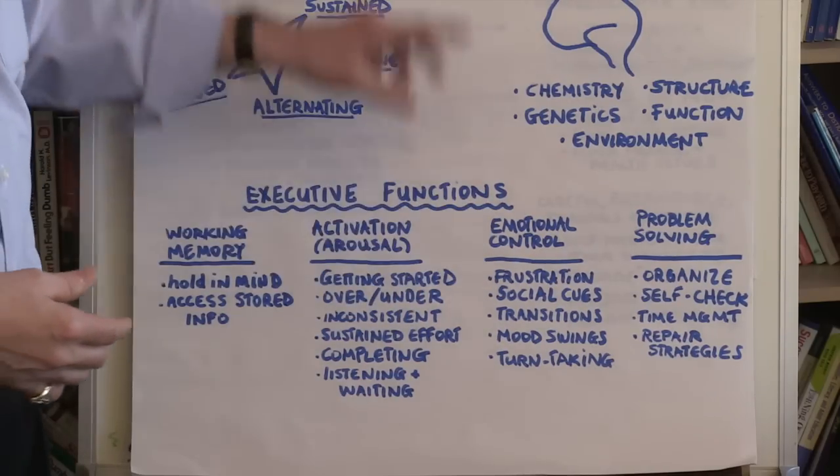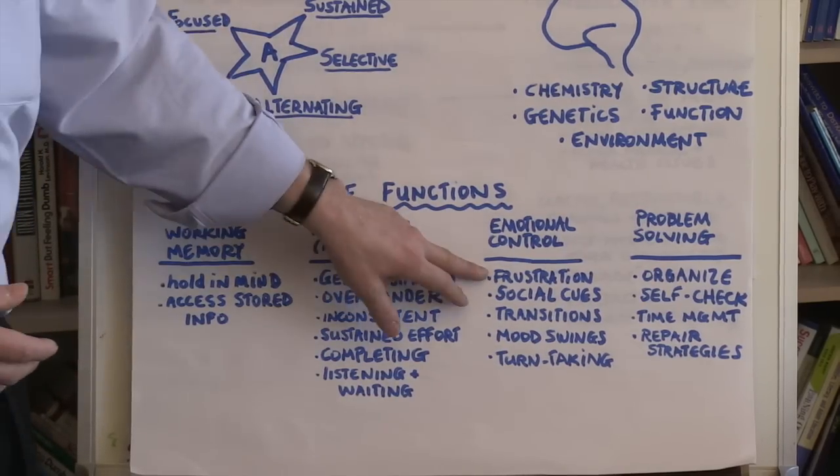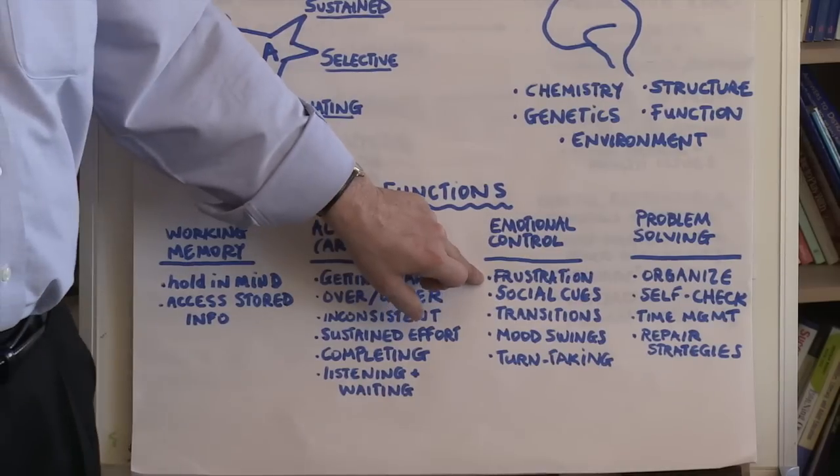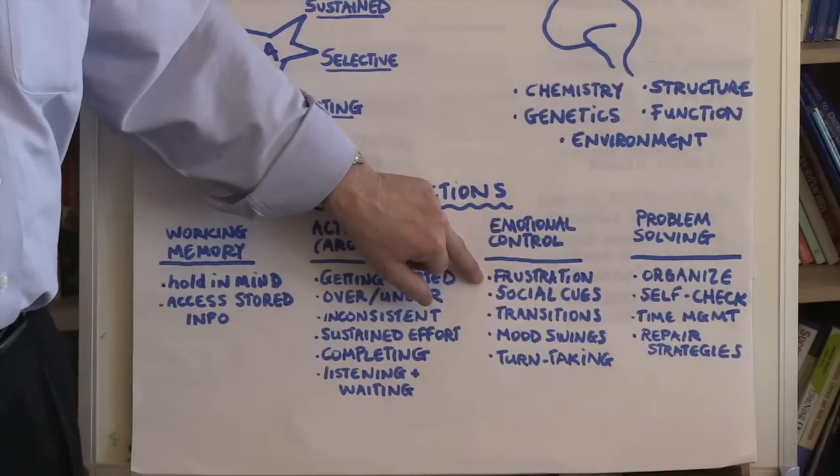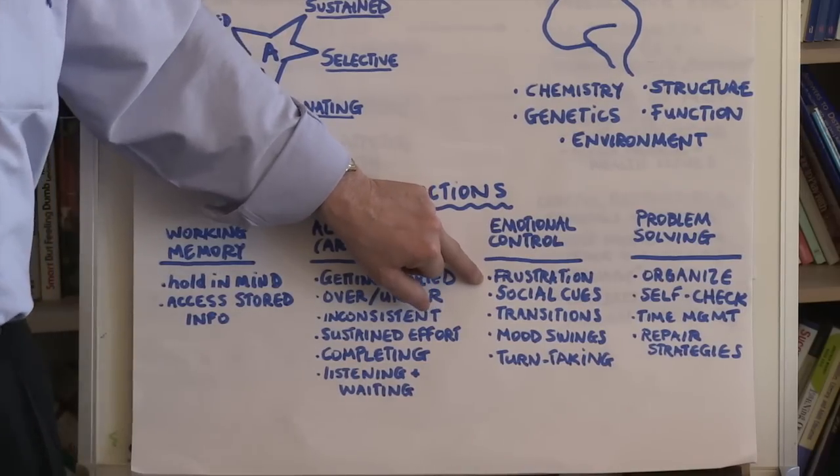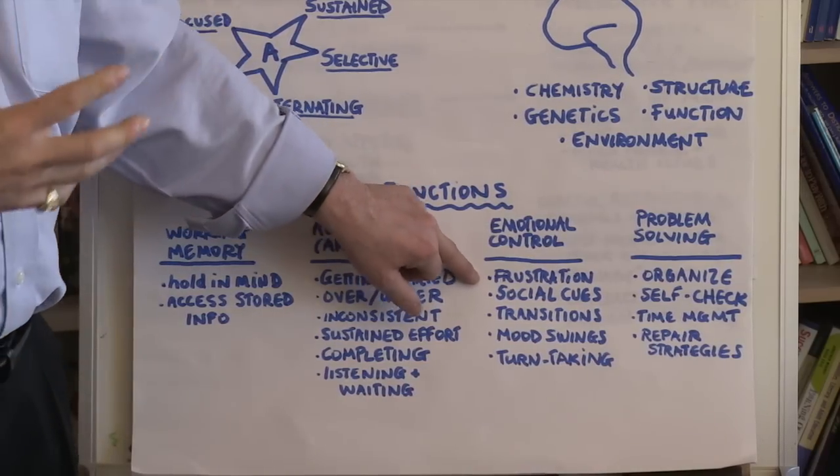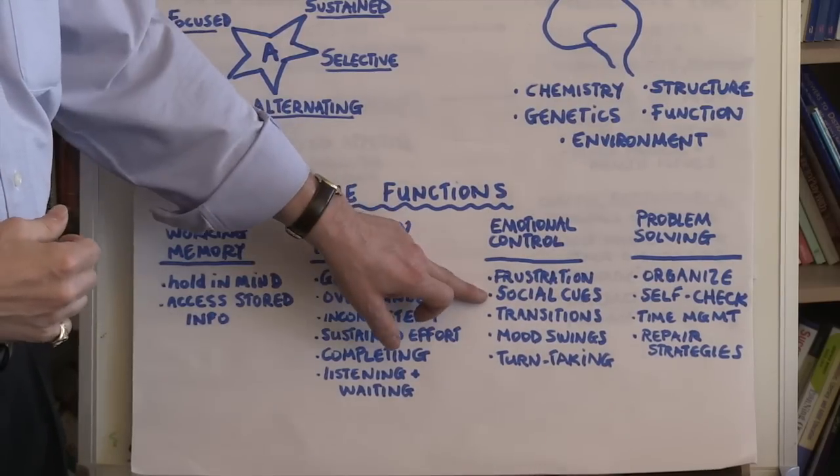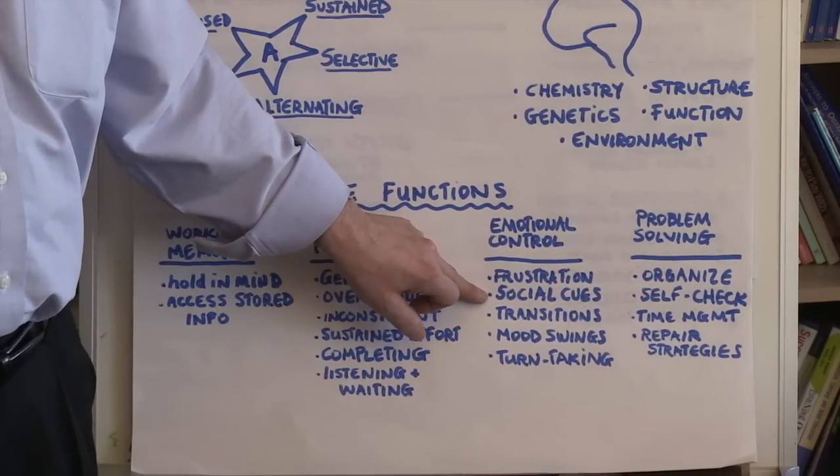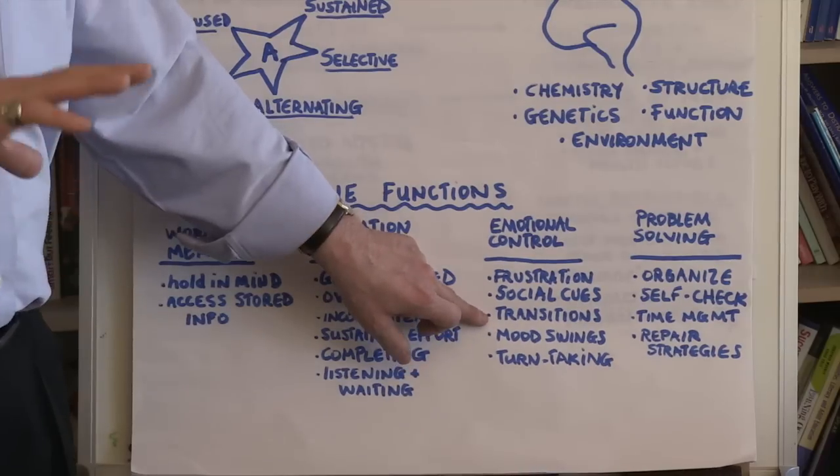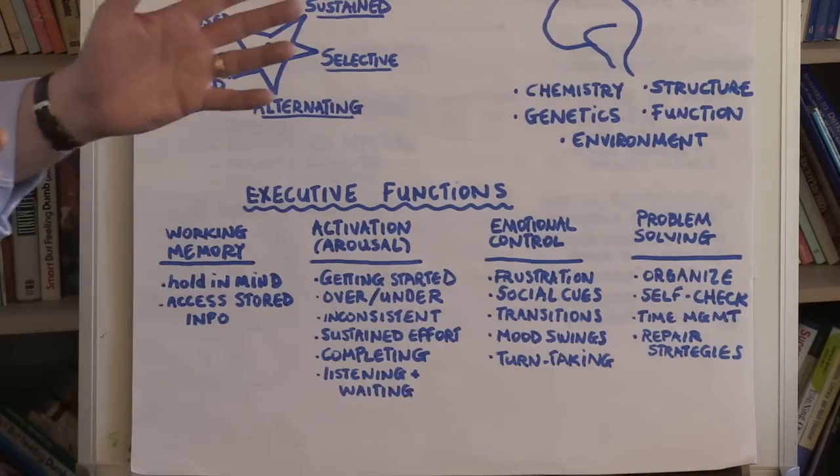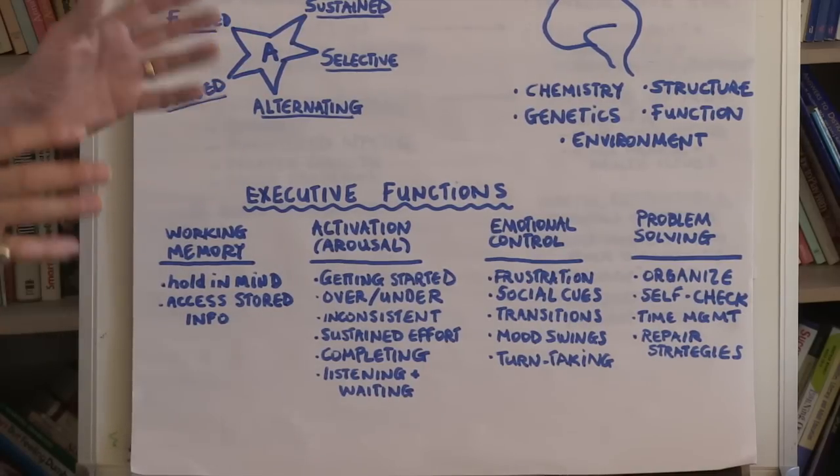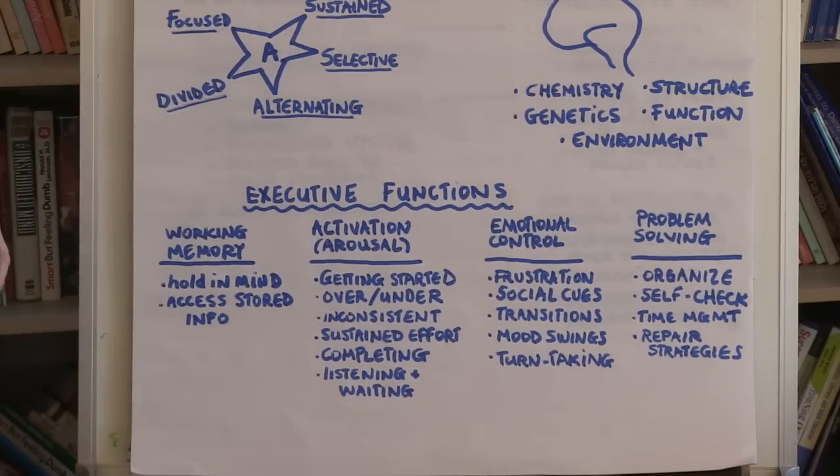In terms of emotional control, individuals with ADHD often will have low frustration tolerance. They just can't tolerate waiting. They just need to jump in. They need to talk. They need to share. They need to be right there in the mix. They may have difficulty reading social cues. They have difficulty transitioning between one activity and another. Often mood swings are seen, and there are other mental health issues that impact upon ADHD as well. And turn-taking is often very difficult for them.